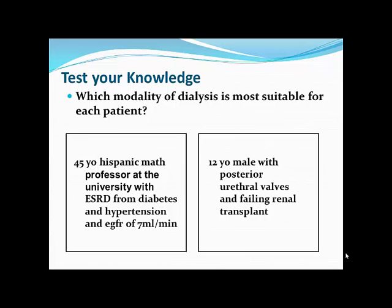A 12-year-old with posterior urethral valves and a failing kidney transplant: PD is preferred. For children, PD is usually a bridge to transplantation. Studies show higher mortality with HD in young patients. Young patients tend to have rapid transport characteristics but do well on automated PD modalities, maintain residual renal function better, and that residual function is especially important for adolescents who may not comply well with fluid and salt restrictions.